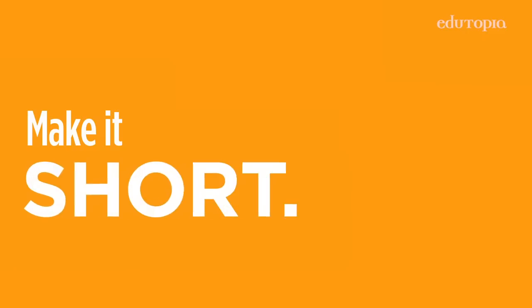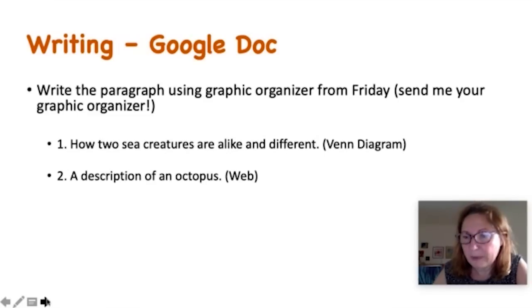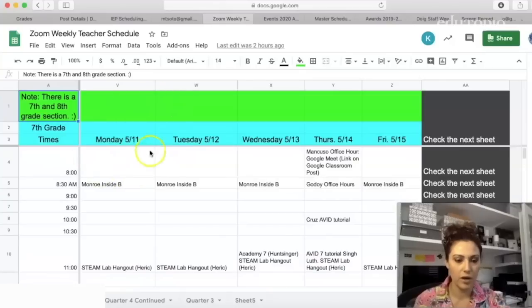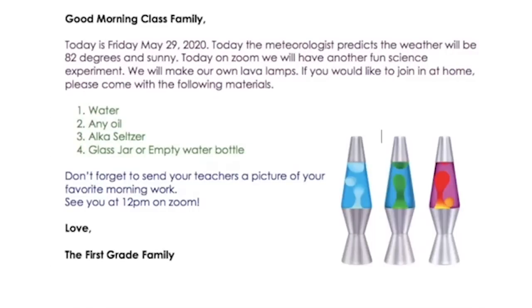The first thing you want to do with your morning messages is make sure that they're short. When I first started, I tried to give the kids information about every single subject. Then I discovered if a longer explanation was needed for a specific activity, it was better to record an additional video. None of the messages should be longer than five minutes — ideally two to three.